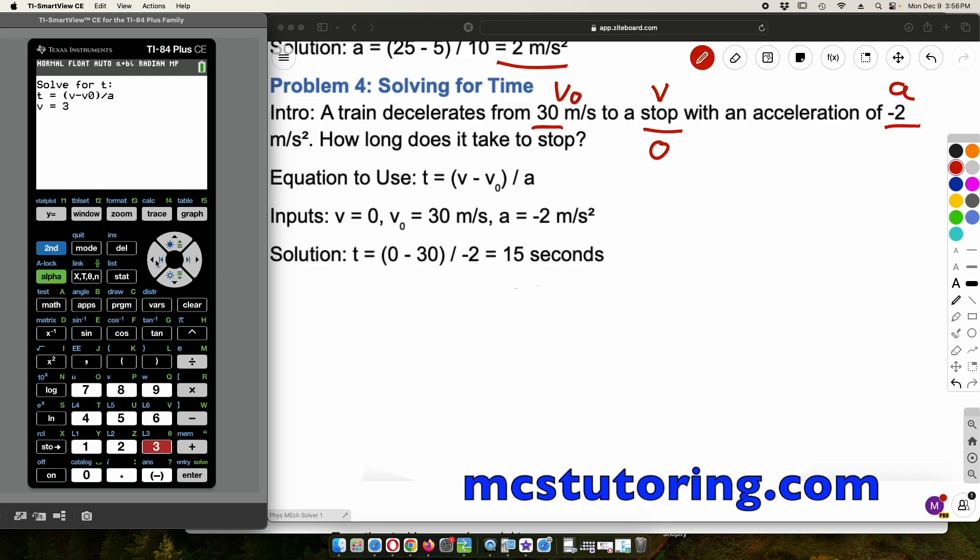So V, excuse me, V is 0. It's a velocity initial that was 30. Oh my goodness. I was about to enter that incorrectly. Acceleration is negative 2. And then, okay, time is 15 seconds. That's great. Okay. Just make sure you label your units, and you should be good to go.